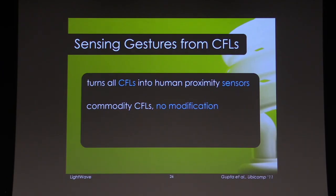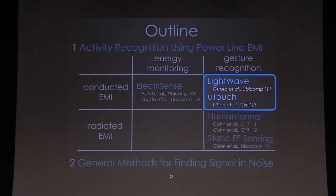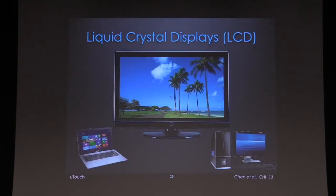Commodity CFLs — there's no instrumentation on the user. And of course you can monitor the noise generated from all those different CFLs with a single point sensor. That's an example of doing gesture recognition like U-Touch, which looks at a different appliance that generates noise — and that is an LCD.